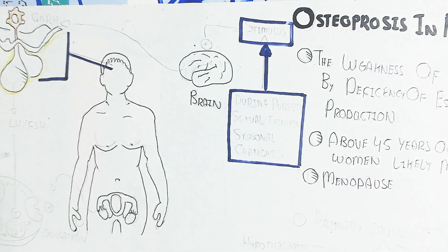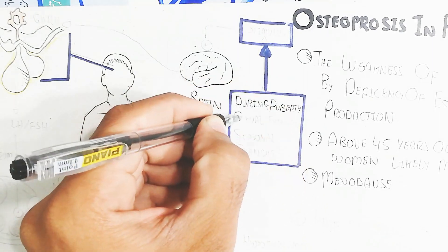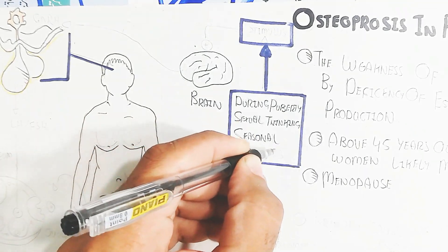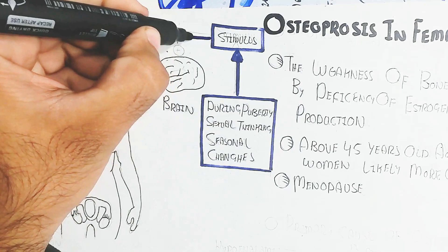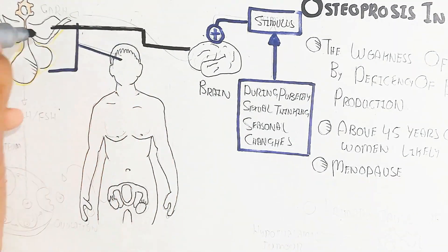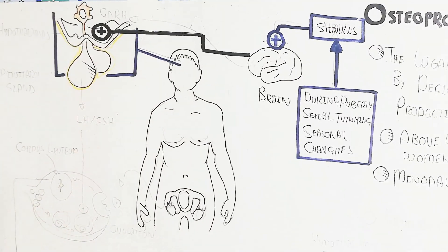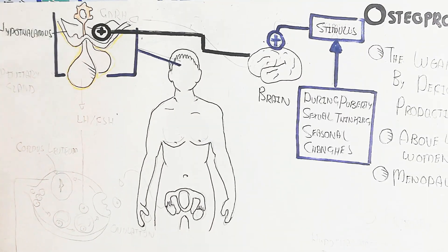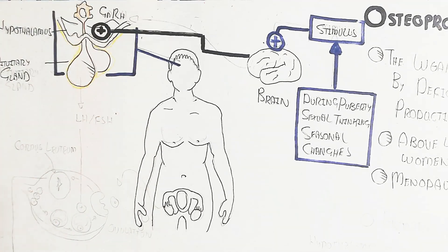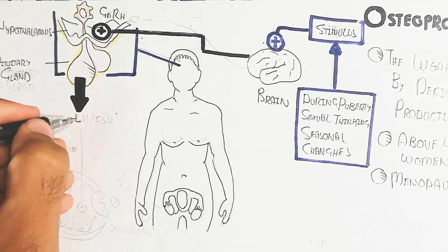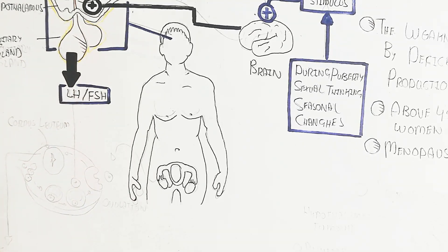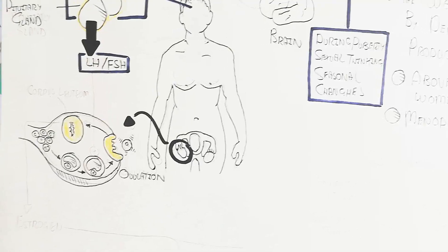During puberty, sexual changes and seasonal changes stimulate nerve impulses to the brain. The higher brain cortex sends a signal to the hypothalamus, which releases gonadotropin-releasing hormone (GnRH). GnRH triggers the pituitary gland to produce luteinizing hormone (LH) and follicle-stimulating hormone (FSH).